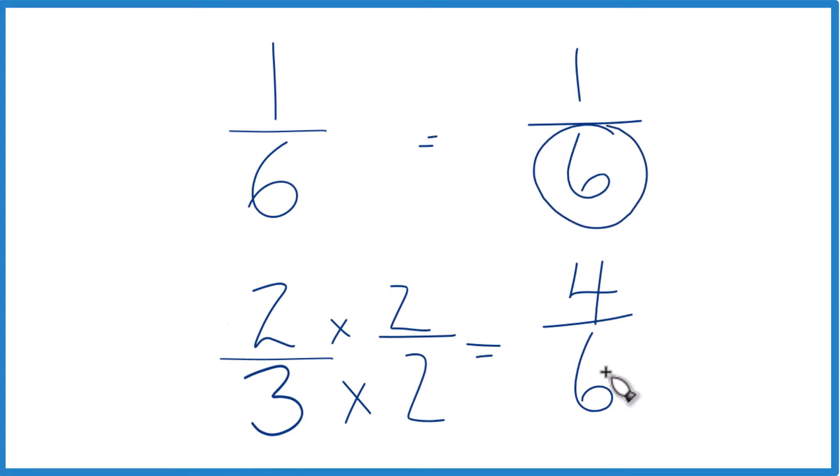But now, same denominator, we just compare the numerators. And 4 is greater than 1. So 4/6, that's greater than 1/6. Remember we said these are equivalent fractions. So 2/3, that's greater than 1/6 as well.